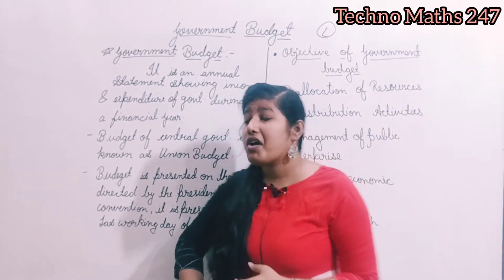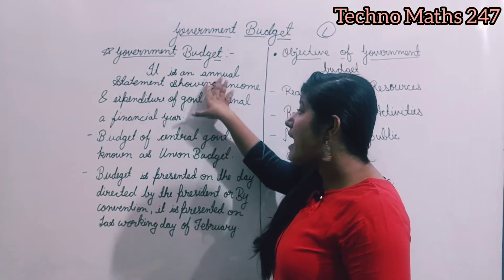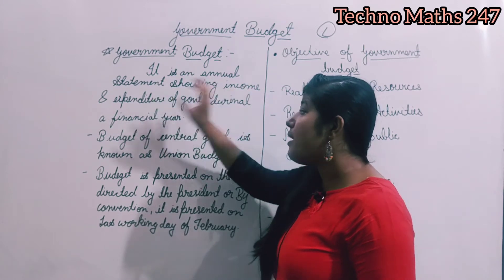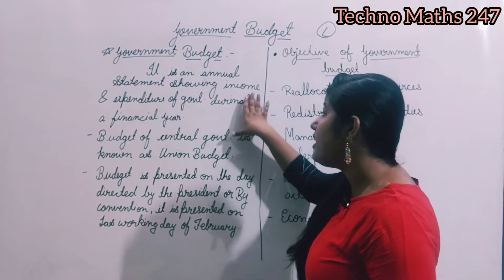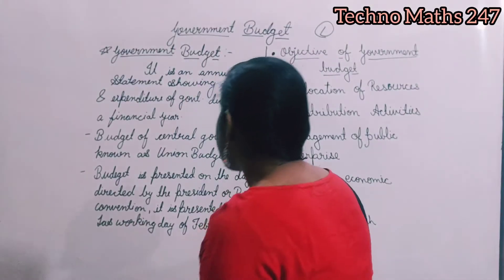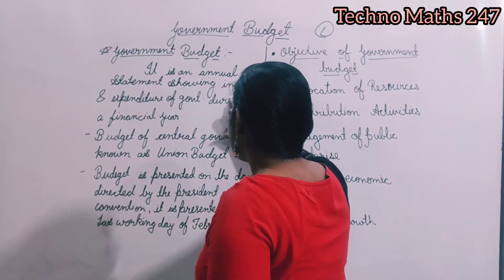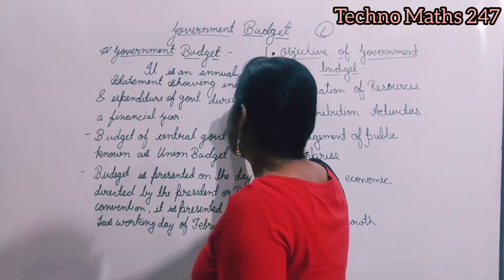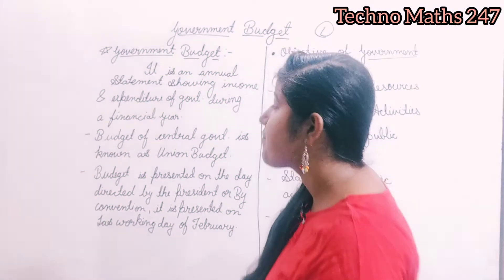तो government का budget क्या होता है? It is an annual statement showing income and expenditure of government during a financial year.